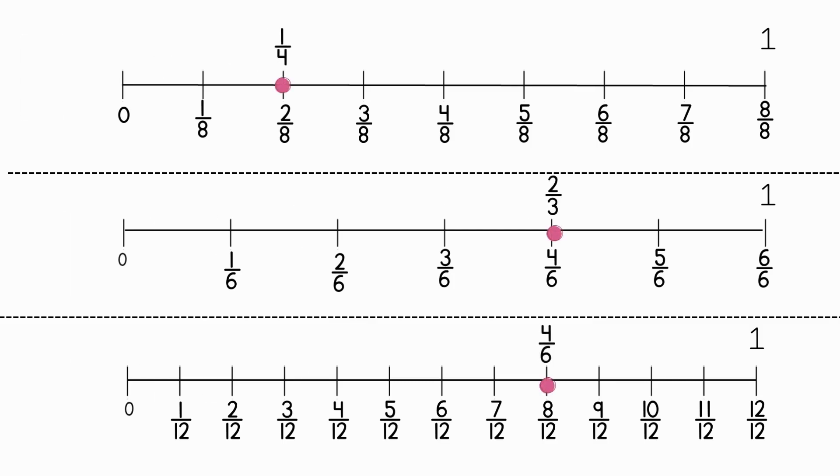One fourth is equivalent to two eighths, two thirds is equivalent to four sixths, and four sixths is equivalent to eight twelfths.